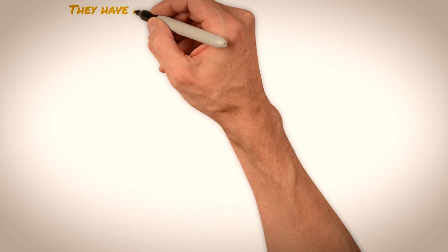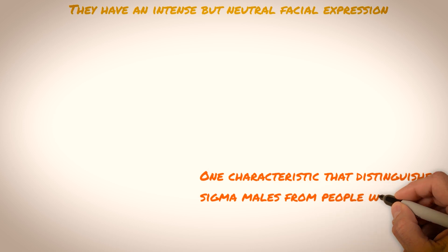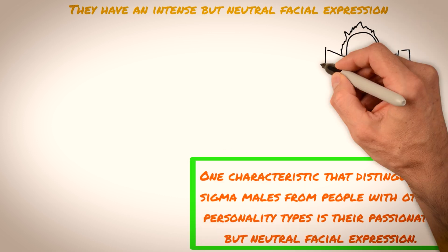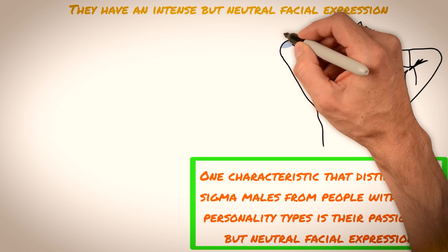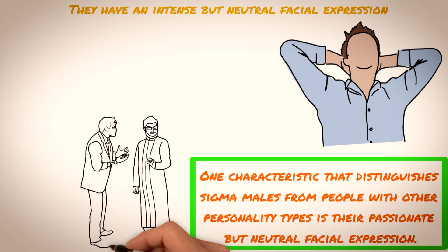They have an intense but neutral facial expression. The intense but neutral facial expression of Sigma males is a defining trait that sets them apart from other personality types. It is not uncommon for Sigma males to come across as stoic or unapproachable, which can be intimidating to those who are unfamiliar with their demeanor.